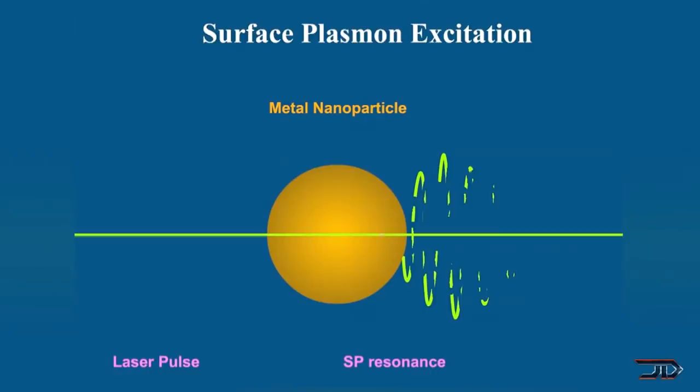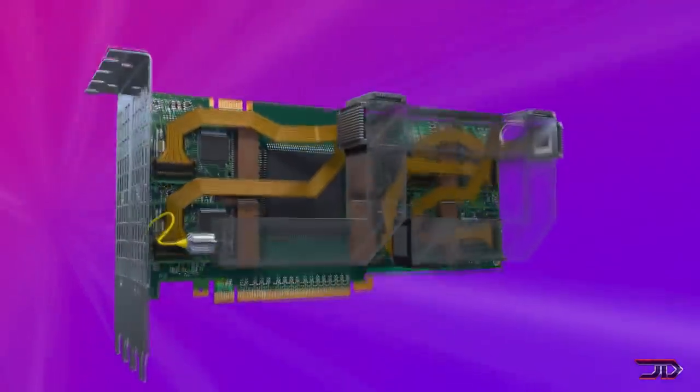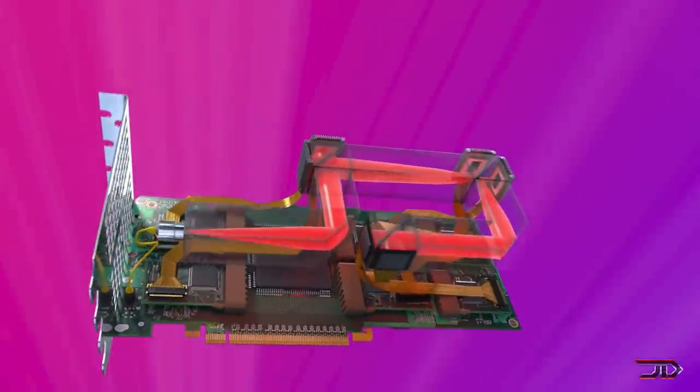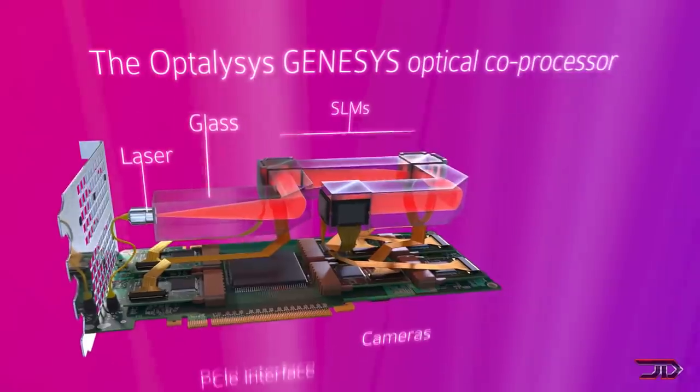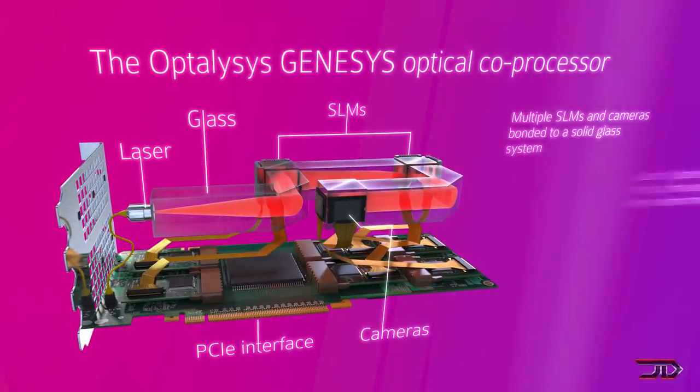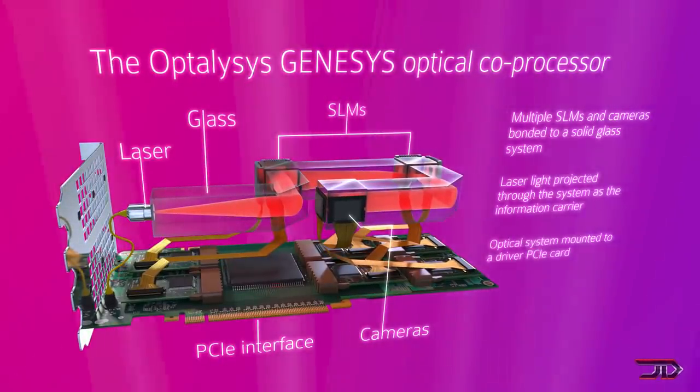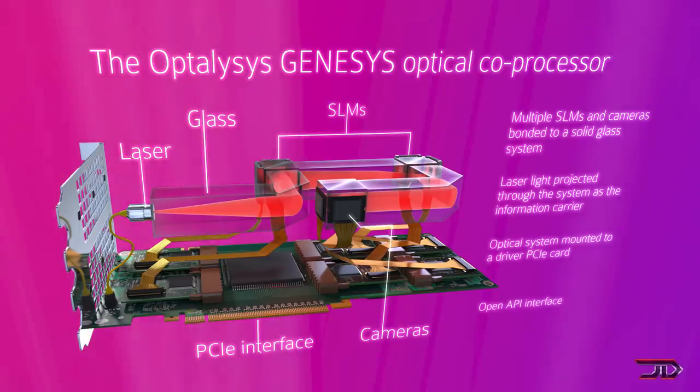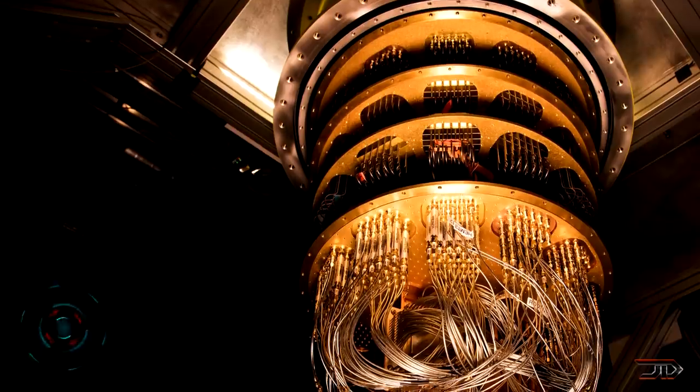Ultimately, light computers can be up to 5000 times faster than conventional computers. And for processors, that would mean running into the terahertz clock rate, which is just mind-blowing. Even though there are some companies using light technology, we are still quite a ways away from making a plasmon light computer.